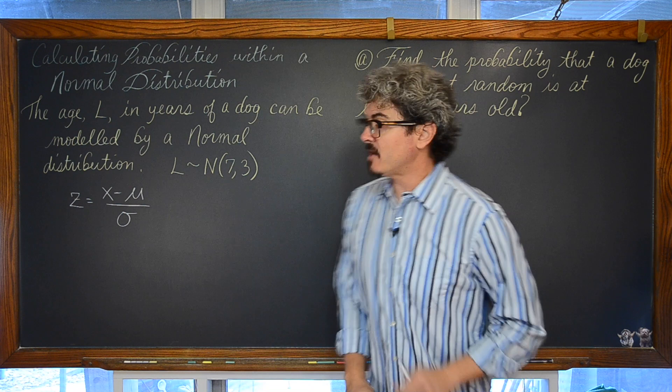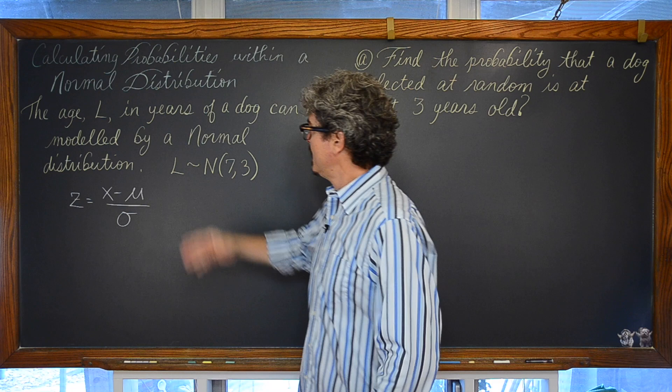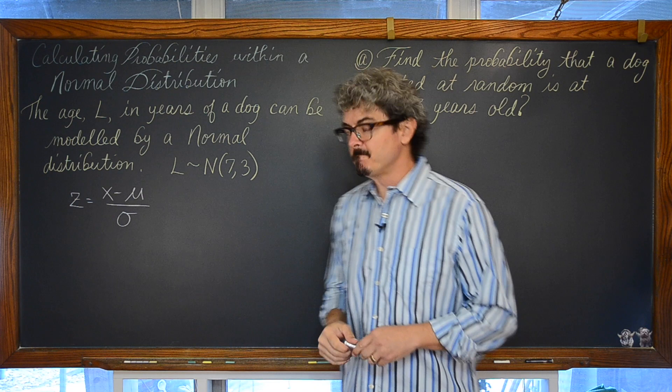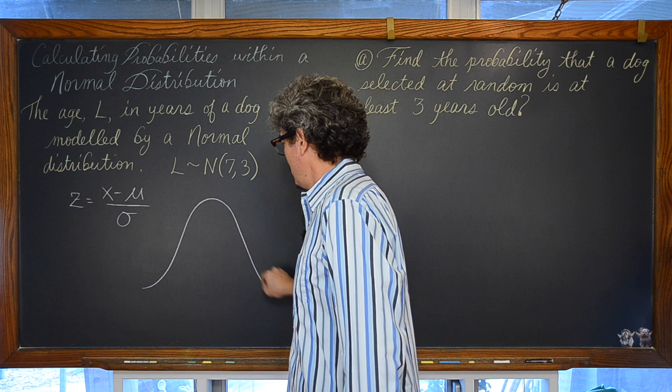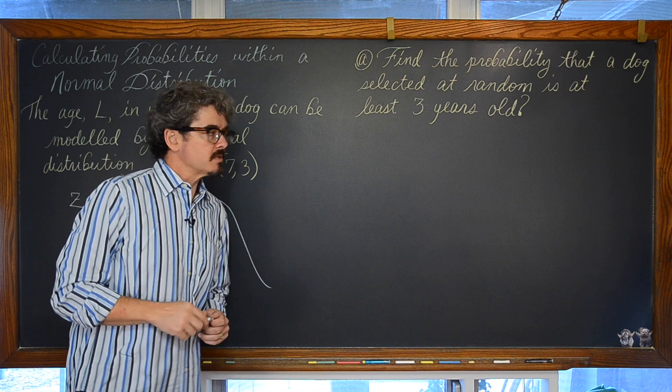All three of our examples are built off this initial story: the age L in years of a dog can be modeled by a normal distribution. In symbols, L follows N(7, 3) — a mean of 7 and a standard deviation of 3. So we are looking at a bell curve whose center is equal to 7.